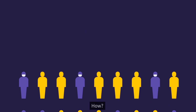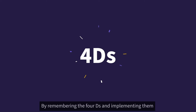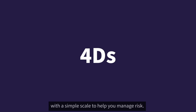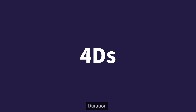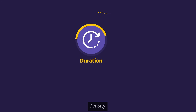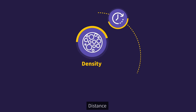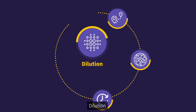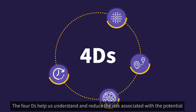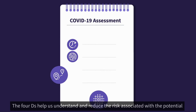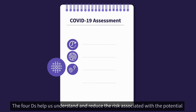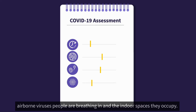How? By remembering the four D's and implementing them with a simple scale to help you manage risk: Duration, Density, Distance, and Dilution. The four D's help us understand and reduce the risk associated with the potential airborne viruses people are breathing in and the indoor spaces they occupy.